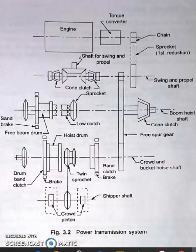The next is boom hoist shaft. To lift the boom, a jaw clutch is engaged with the free boom drum and the cone clutch is engaged with the boom hoist shaft, thereby hoisting the boom. The boom drum is prevented from rotation by disengaging the cone clutch and simultaneously applying the brake on the drum as provided. Lowering of the boom is achieved by its own weight and is controlled by the brake.